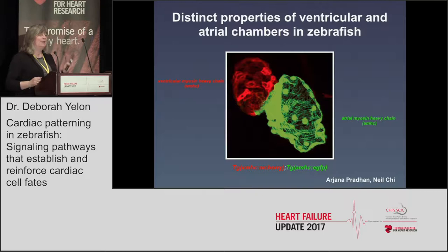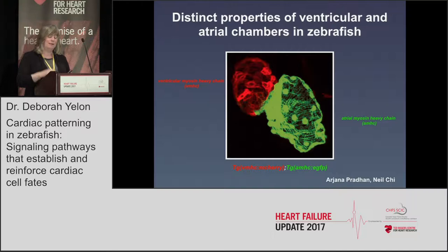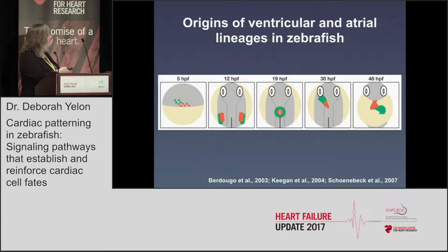On the cellular level, it's clear that cardiomyocytes in the atrium and ventricle have unique attributes in terms of gene expression, unique action potentials, and even particular cellular morphology and subcellular structure characteristic for ventricular and atrial cells. We think about this question in the context of the zebrafish embryo. In the zebrafish embryonic heart there's a very simple ventricular-atrial layout — just one ventricular chamber and one atrial chamber — and we typically use the markers VMHC and AMHC to distinguish these cell types.